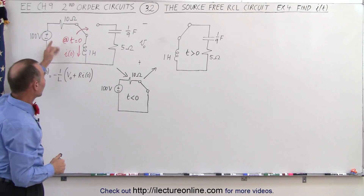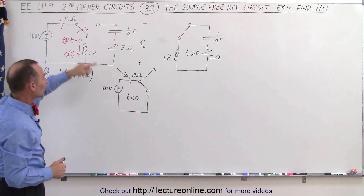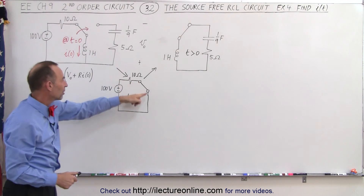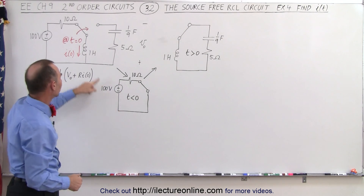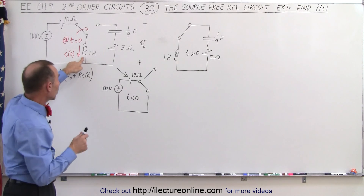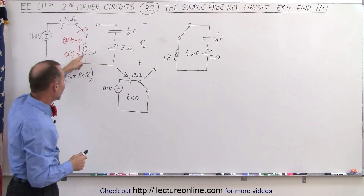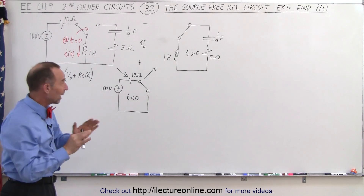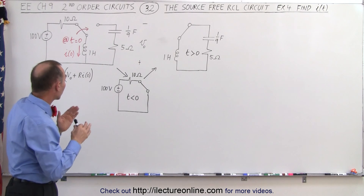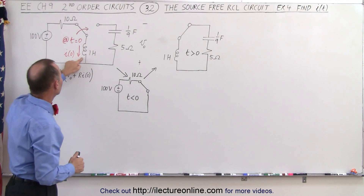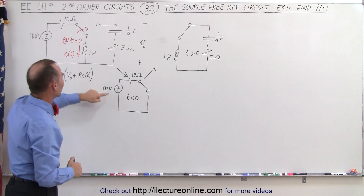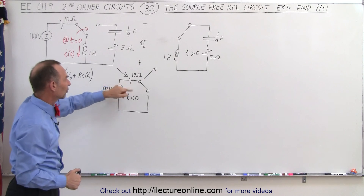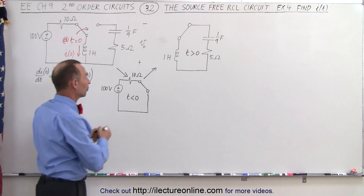Before the switch changes, before time reaches zero, we have a continuous circuit. Notice that in the case of the inductor, it will be replaced by a short, because inductors do not oppose a constant current. So we just have a voltage source and a resistor, and therefore we can find the initial current.